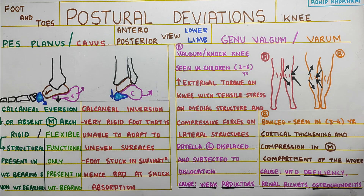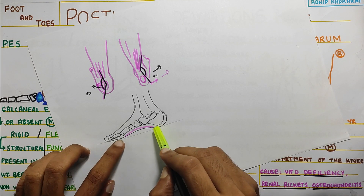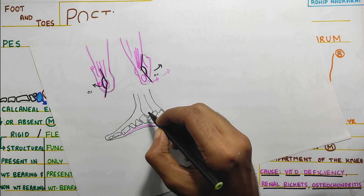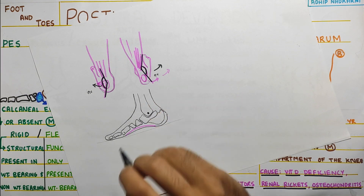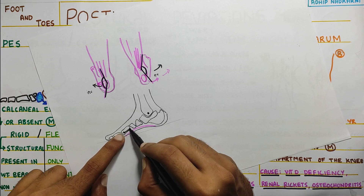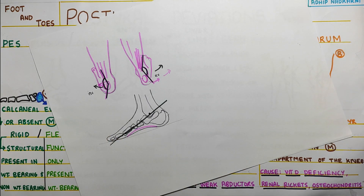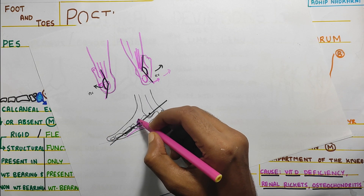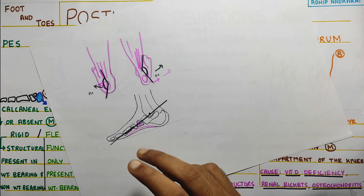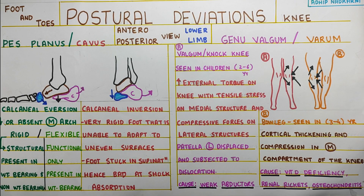Another way to determine if your foot has the right amount of arch is the Feiss line method. You mark the medial malleolus and the first metatarsal prominence, join the line, and then see where the navicular falls — whether it is above or below the Feiss line, and how it changes with weight bearing versus non-weight bearing. This gives you a better idea for diagnosing flat foot. So that was about the ankle — now let's move on to the knee.